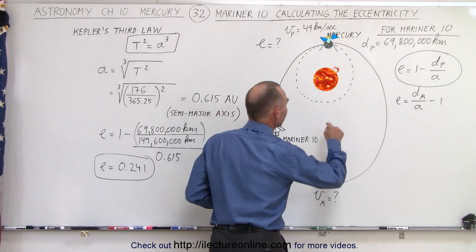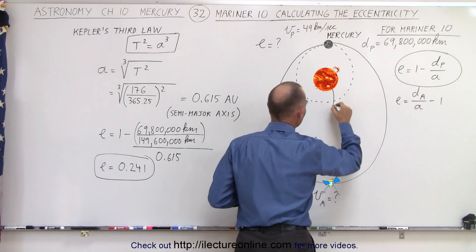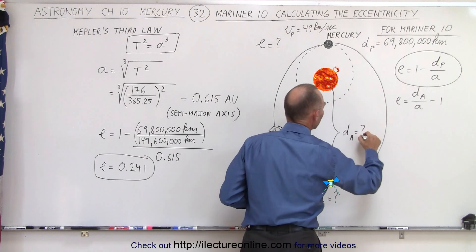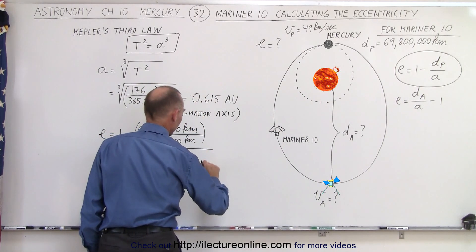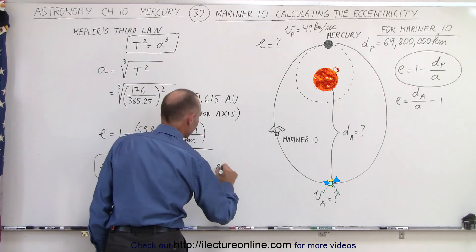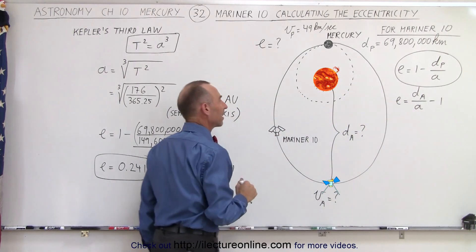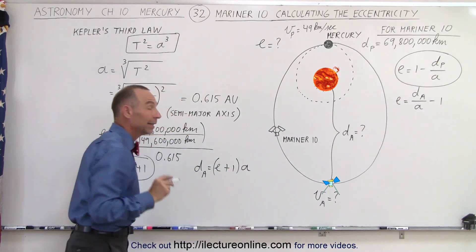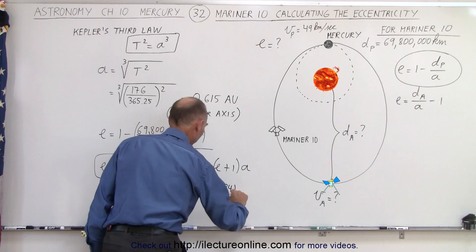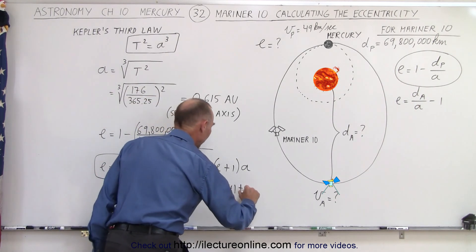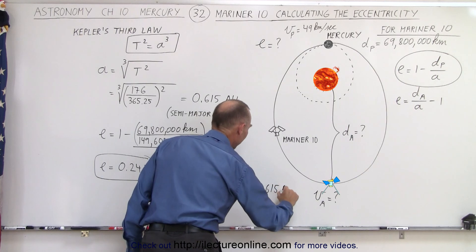If we now want to calculate the distance from the Sun to the farthest point in Mariner 10's flight path — at aphelion — we use the second equation, rewritten as: the distance to aphelion equals (eccentricity plus 1) multiplied by the semi-major axis. In this case, that is 0.241 plus 1, multiplied by the semi-major axis of 0.615 astronomical units.